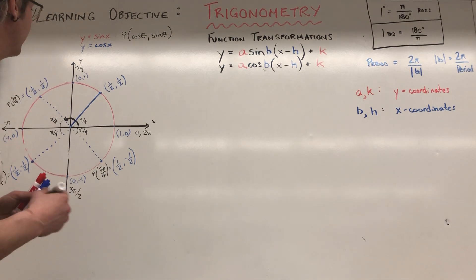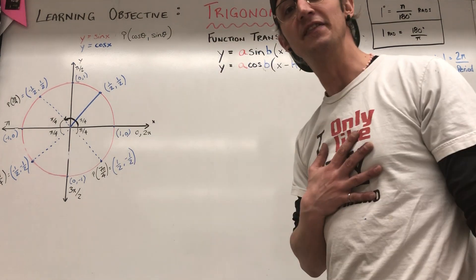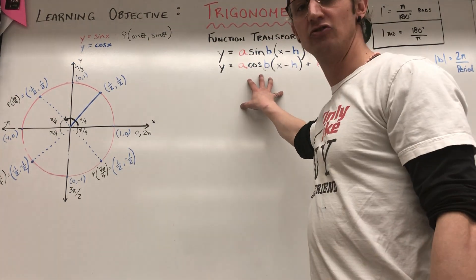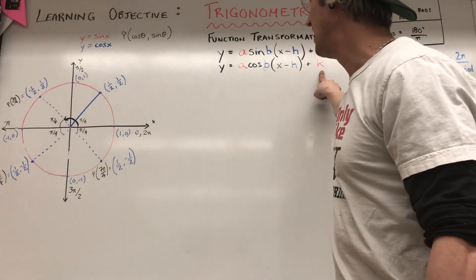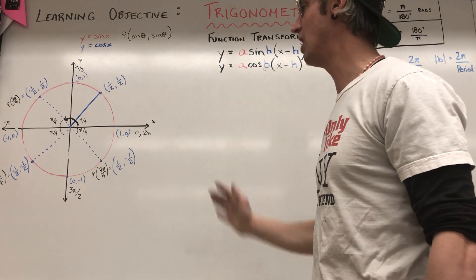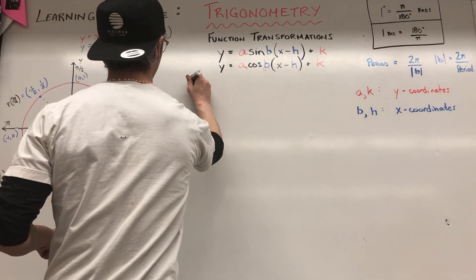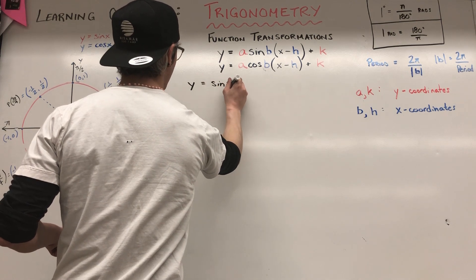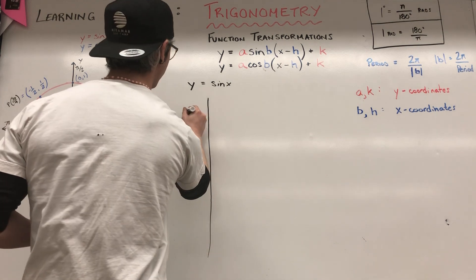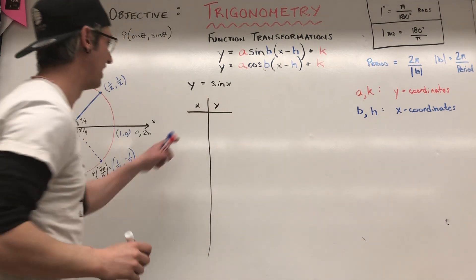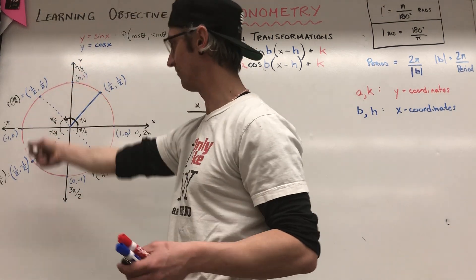We're going to start dealing with function transformations — our a, our b, our h, and our k. What I wanted to do was create a table of values for the sine wave, our baseline function, and fill it out using some points off our sine wave, which I would just get from the unit circle, because our sine wave data points come from the unit circle.